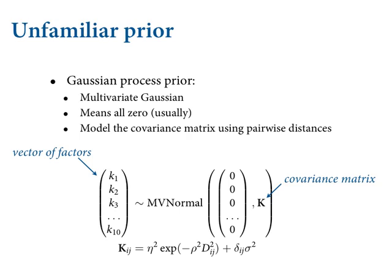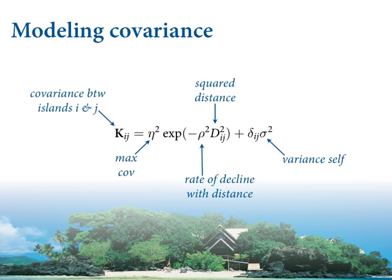The covariance between islands i and j — say Tonga and Hawaii — equals eta-squared times e to the minus rho-squared times d_ij squared. Eta-squared is the maximum covariance between any two islands, fitted from the data. Rho-squared is a rate of decline with distance, also fitted from the data. d_ij squared is the squared distance between islands from our distance matrix.